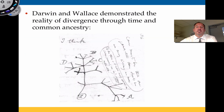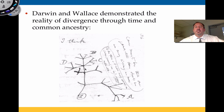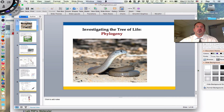Charles Darwin and Alfred Russel Wallace had it right when they demonstrated natural selection and the origin of species through adaptive radiation. This reality of divergence through time and common ancestry is being worked out in the study of phylogeny and phylogenetics. I hope you enjoyed this brief look at phylogenetics — thanks for watching.